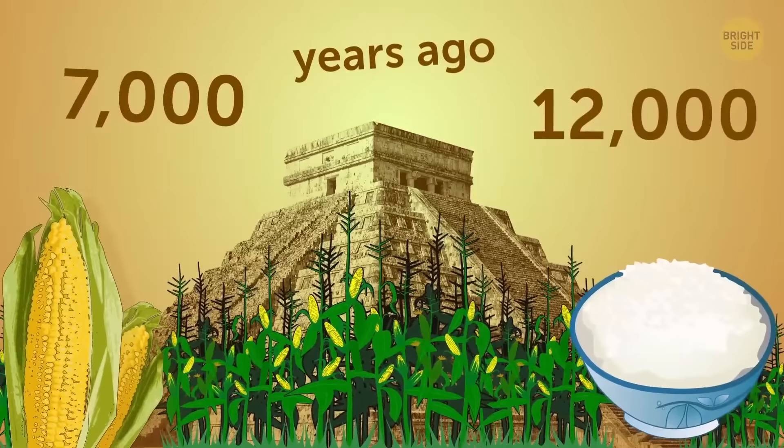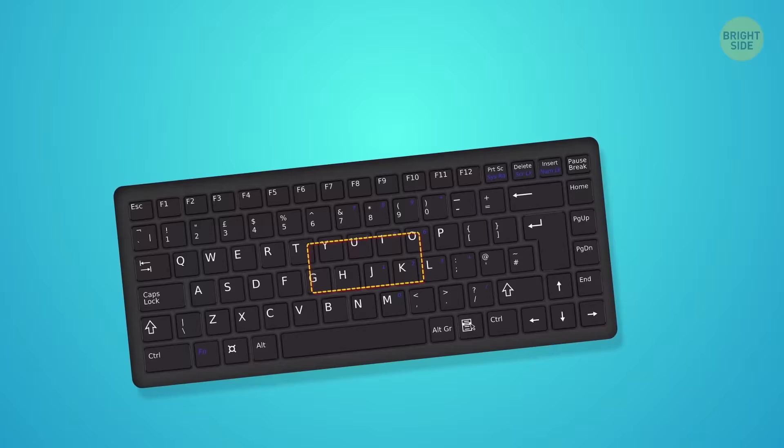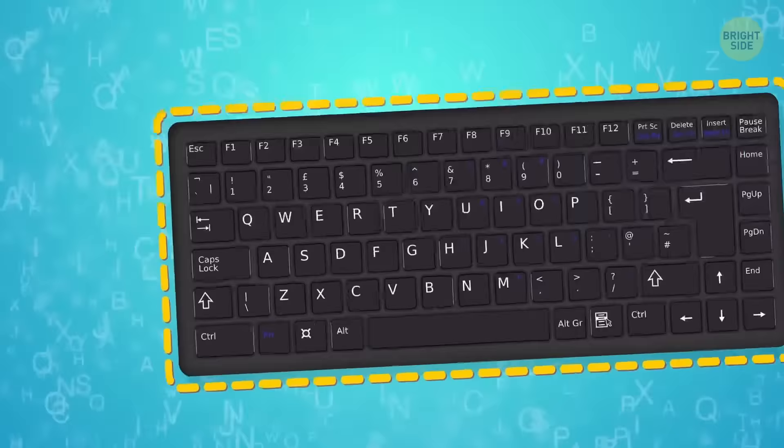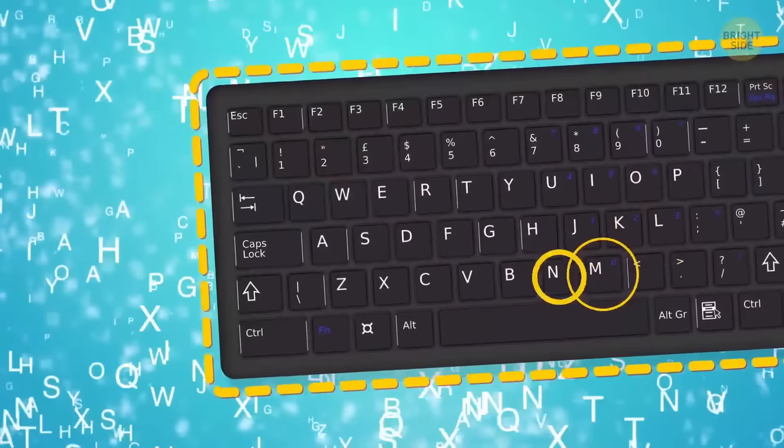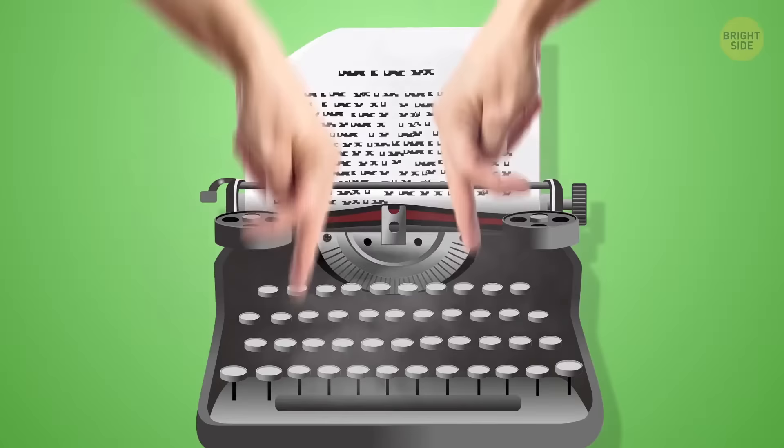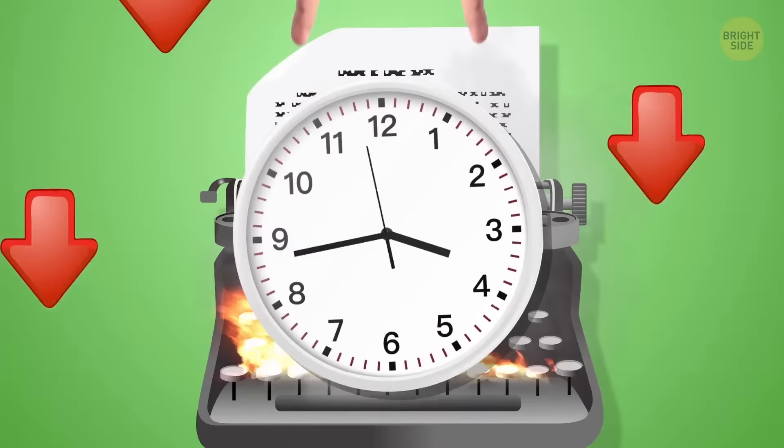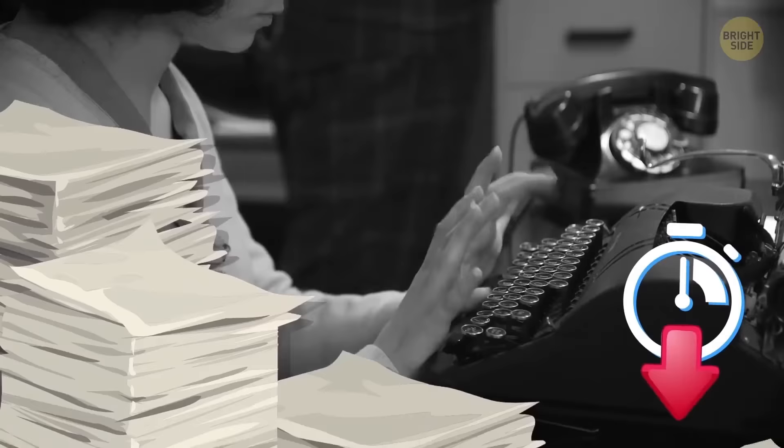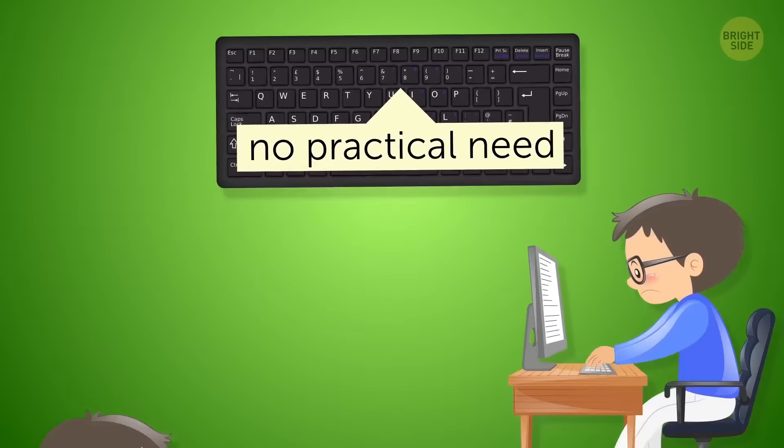Now, the keyboard you use today was originally designed to slow you down. The position of the letters isn't as random as it might seem. It's called QWERTY design. See the top left row of letters. And it appeared in 1872. The main purpose of this design was to slow down the typists of that time. They were getting too fast for the machines they used. As a result, typewriters jammed, which wasted tons of time. And however counterintuitive it may sound, slowing the typists down actually made them more productive. Obviously, there's no practical need for the QWERTY keyboard nowadays. But people are so used to it, that it's probably not worth coming up with a new design.